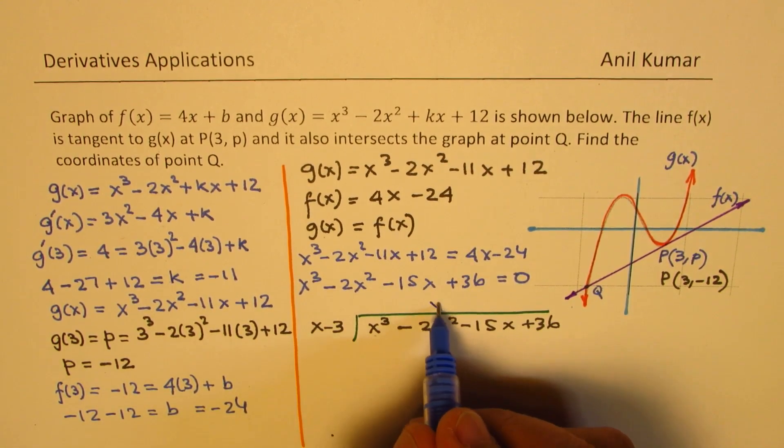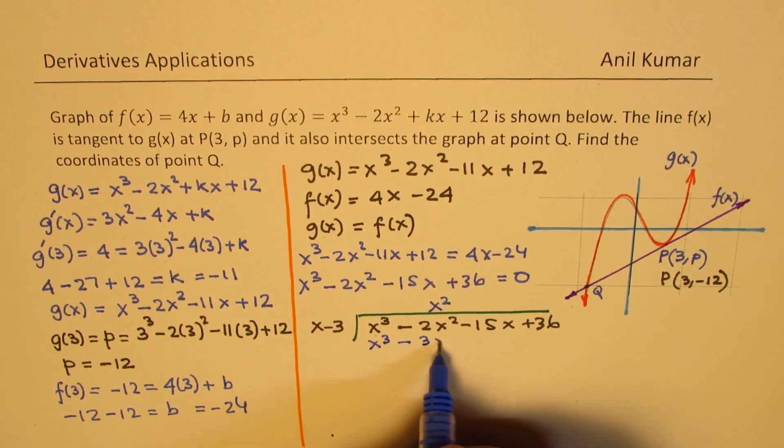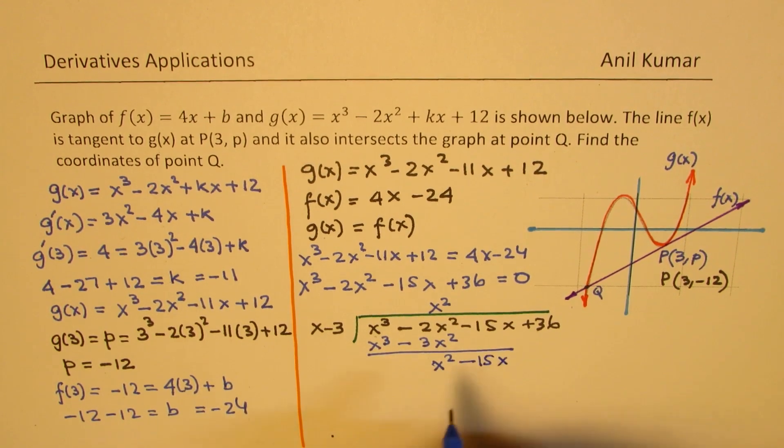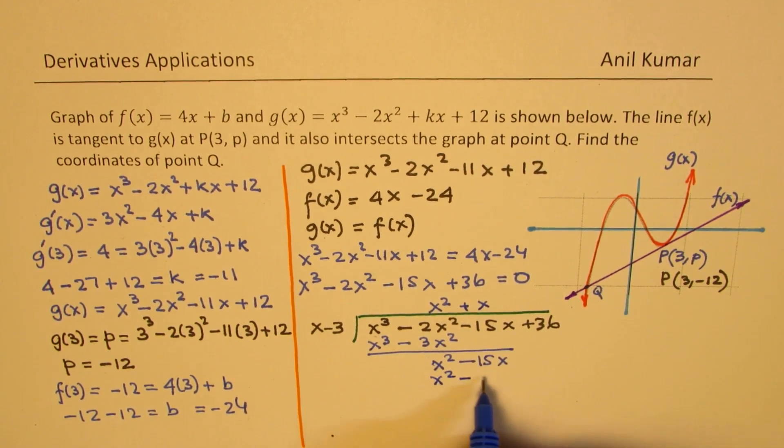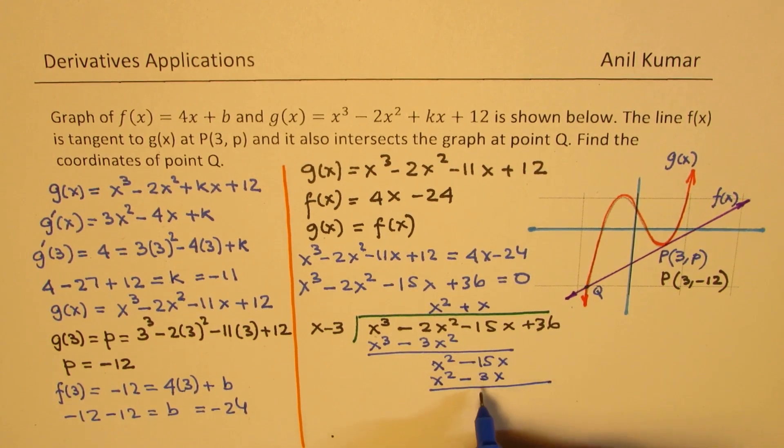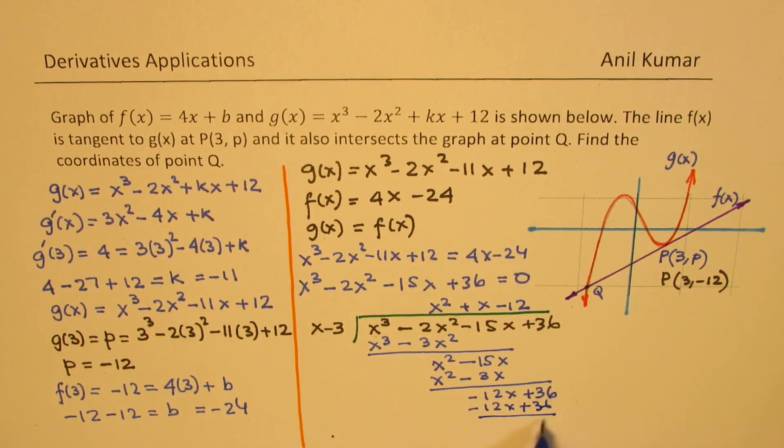We'll do long division. x³ - 2x² - 15x + 36 divided by x - 3. It goes x² times, we get x³ - 3x². That gives you x² - 15x. Then we have +x, we get x² - 3x. And that gives you -12x + 36, and that is -12x + 36, remainder 0 as expected.